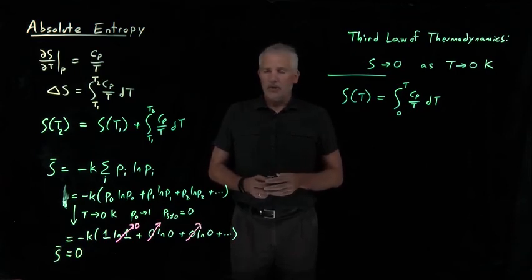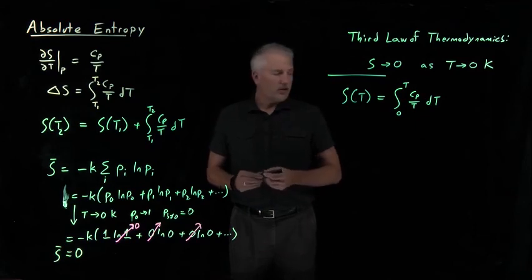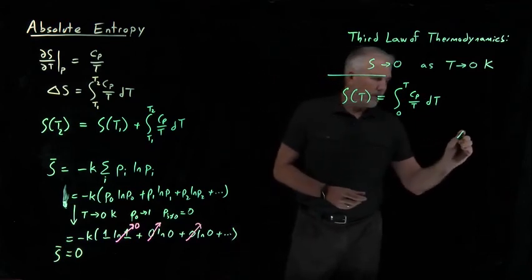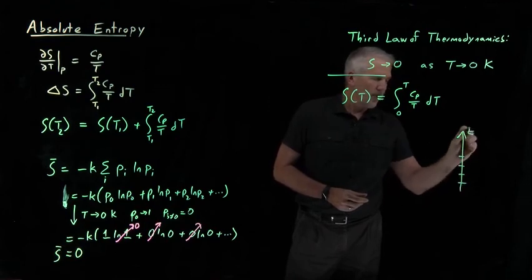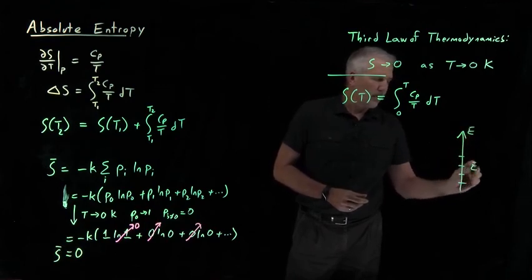I'm normally able to choose the zero of energy anywhere I want. So let's say I have an energy ladder with a bunch of different energy levels.